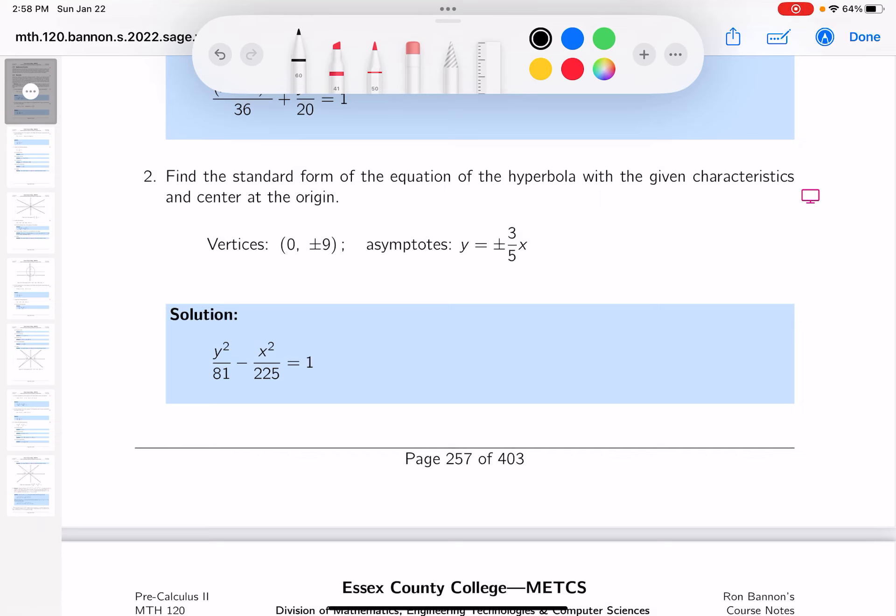Again, what I do is just a very rough picture something like this over your xy-axis. They say the asymptotes are plus or minus three-fifths, and let's see what that means. That's going to look sort of like this over here, again just rough.